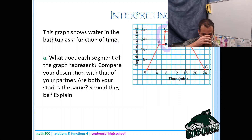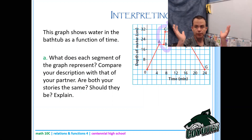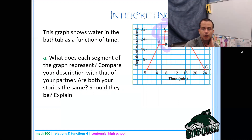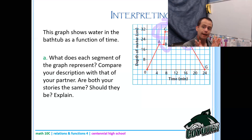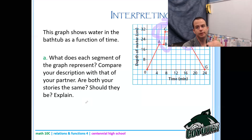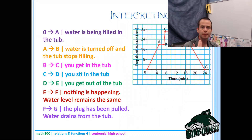From B to C there's a rapid increase in water depth over a short period of time - a person is getting into the tub, causing water displacement. From C to D the level hasn't changed - the person is soaking, from just under 8 minutes to just over 16 minutes, about an 8 or 9 minute soak. From D to E there's a rapid decrease as the person gets out. From F to G the person has pulled the plug and the water drains - the depth consistently decreases.